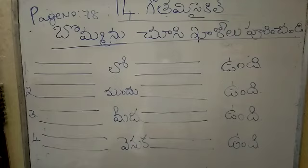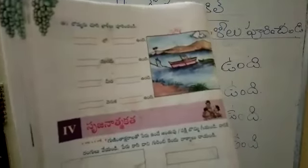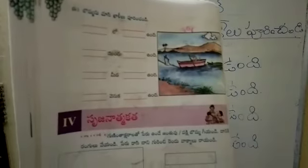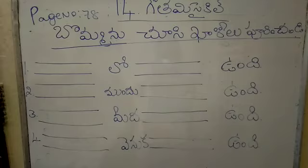Children, this is a very, very important bit. Here, they gave prepositions: low, mundu, mida, venukai.